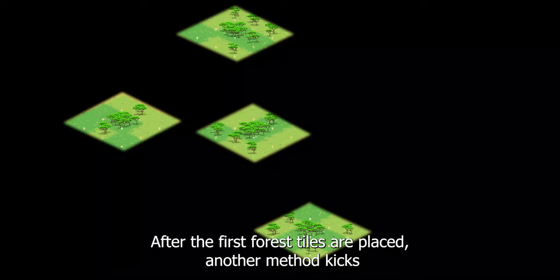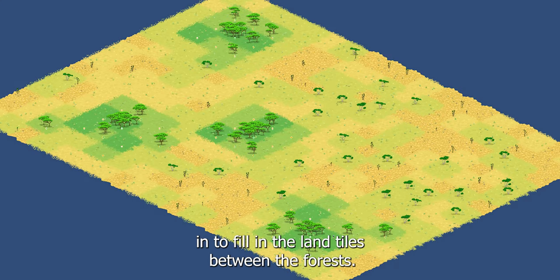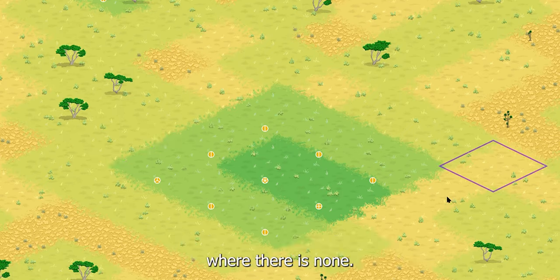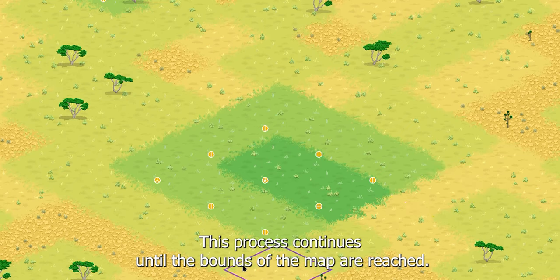After the first forest tiles are placed, another method kicks in to fill in the land tiles between the forests. The algorithm rotates clockwise around each forest, filling in new land where there is none. This process continues until the bounds of the map are reached.